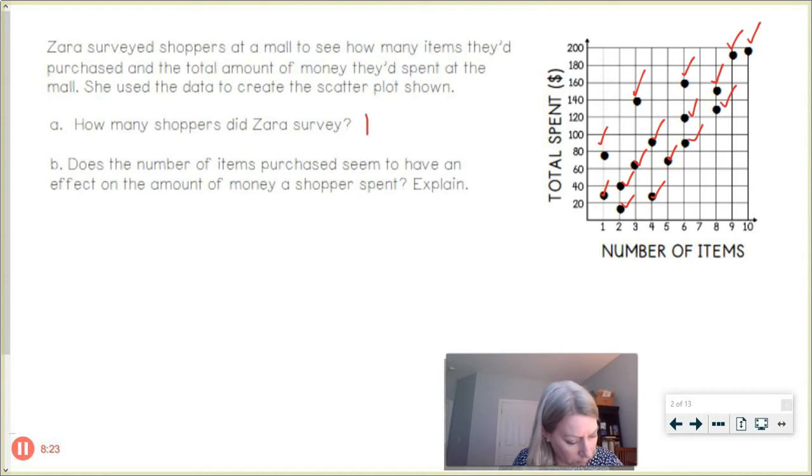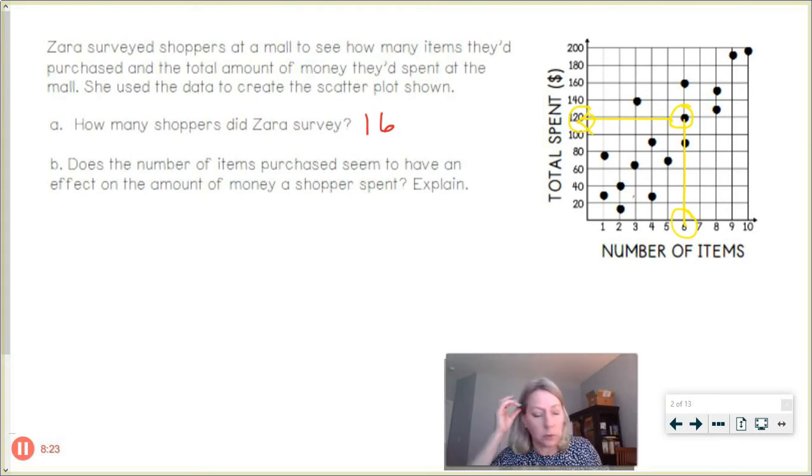So we could actually pick one of those data points and if I pick something like, let's look at this one here, if I can just highlight a little bit, just erase some of these. I'm going to just highlight this one dot right here. It looks like one shopper that they surveyed bought six items and spent $120 for instance. That would be one person surveyed.